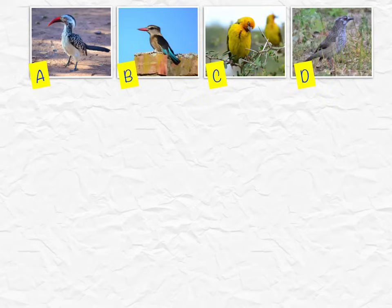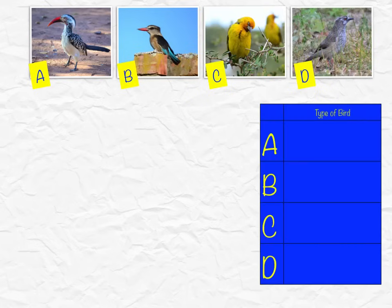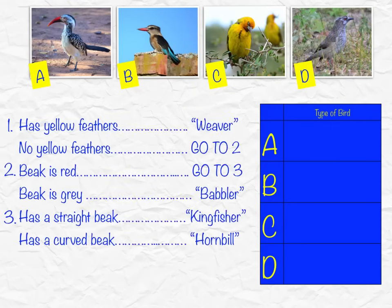You're given four different organisms and you want to identify what the name of each one is. We've got an answer grid here — we just want to write the type of bird for A, B, C, and D. The key looks something like this. It does look complicated, but it's actually really simple to use.